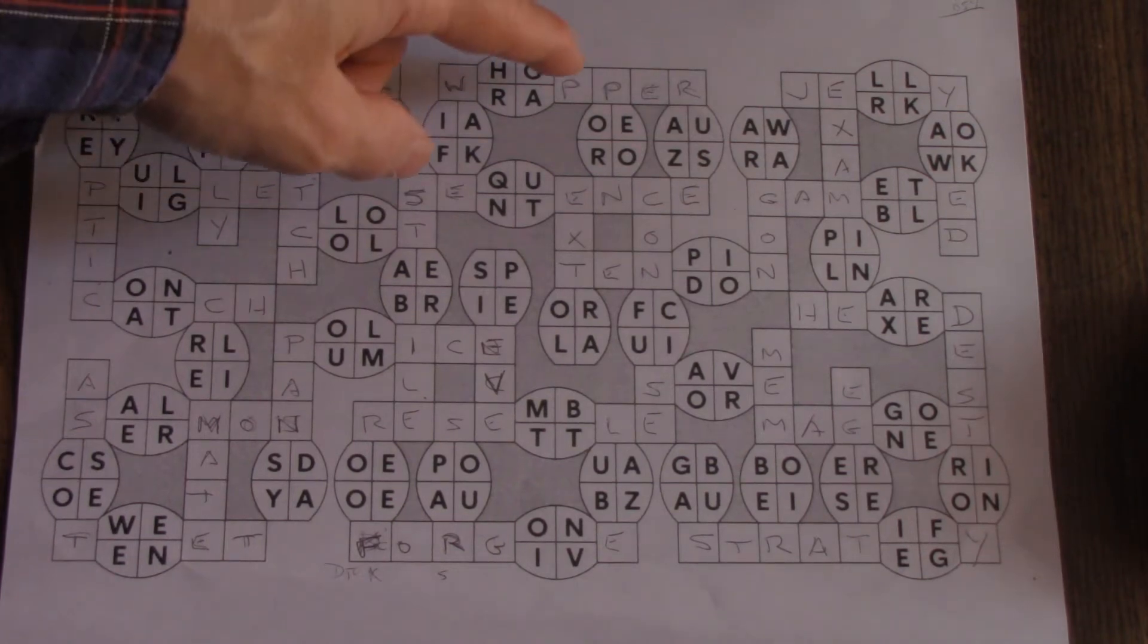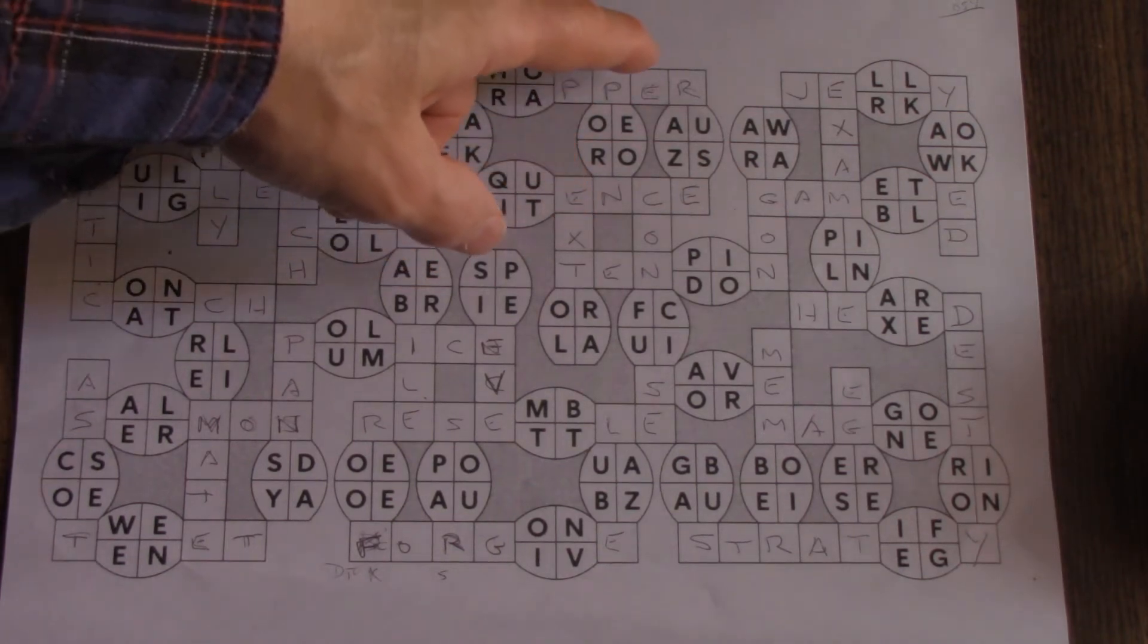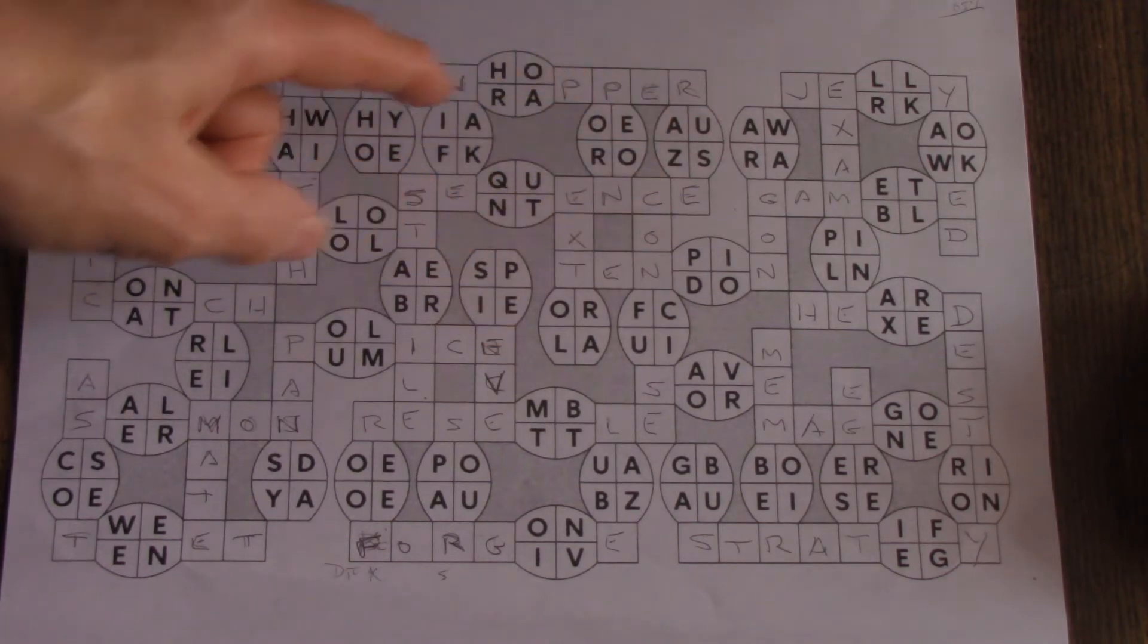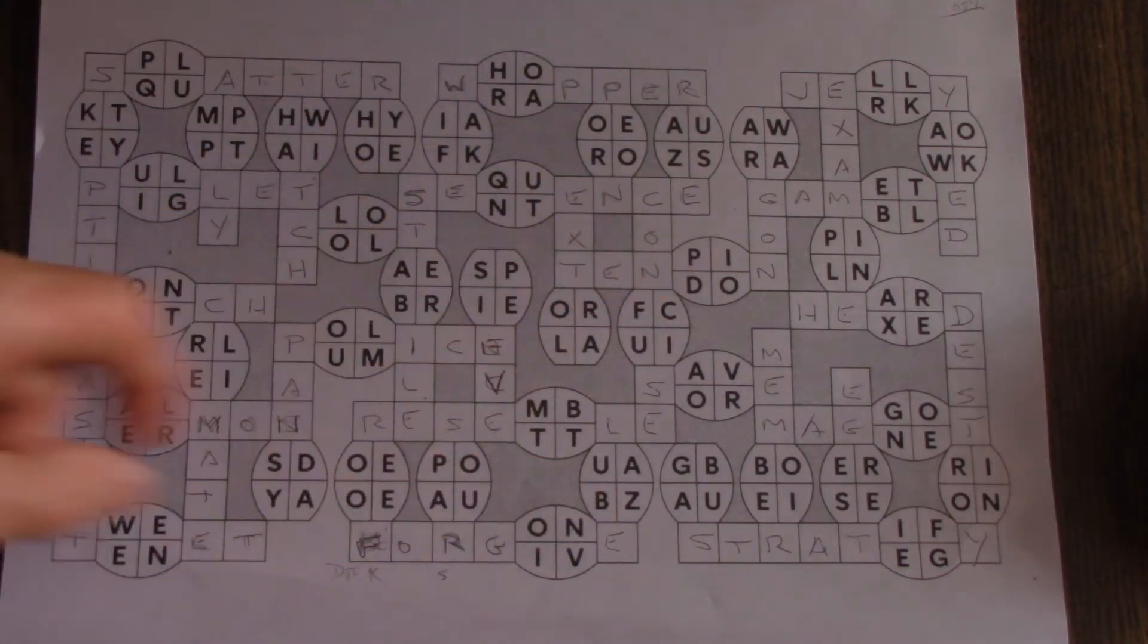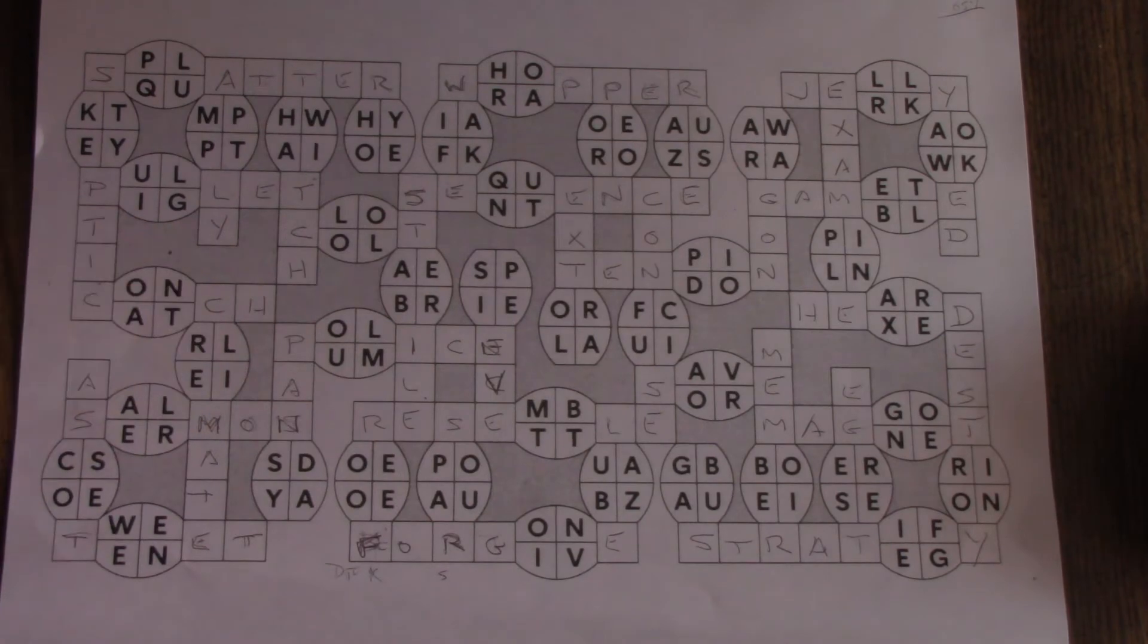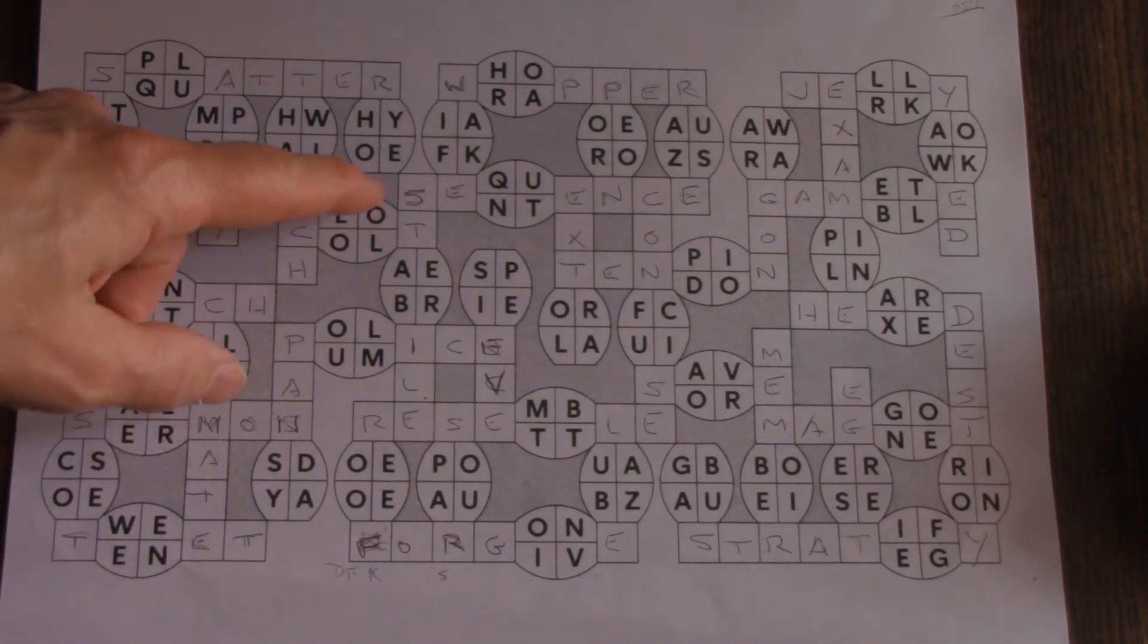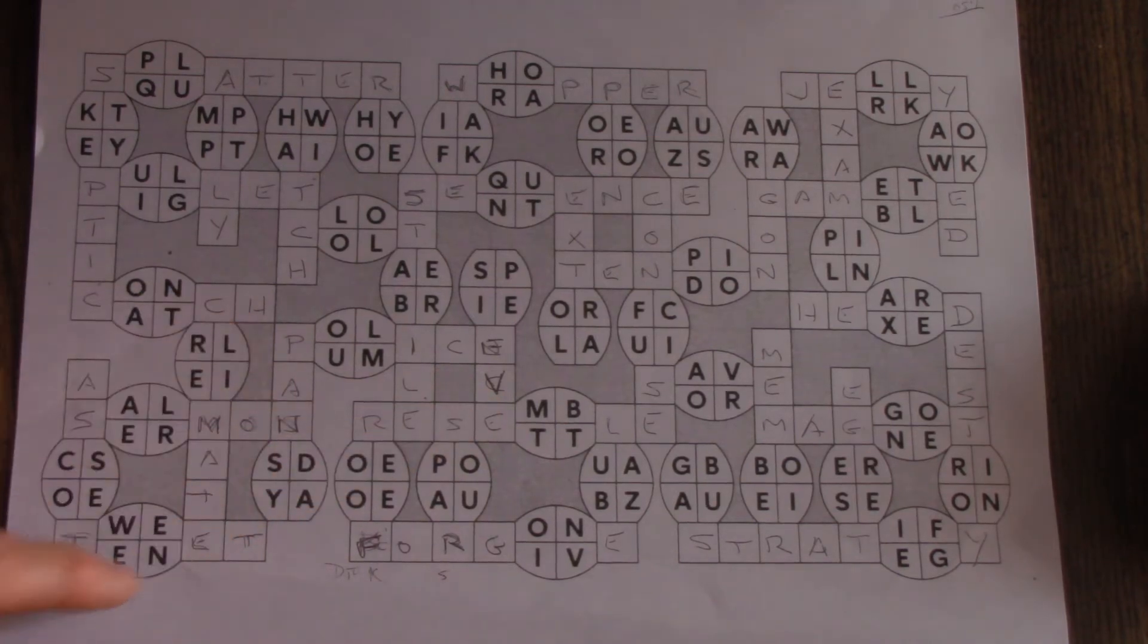Whopper and rapper, peon and porn, raise and ruse, sequence and sentence. I think that was the first one I got, actually. Stabile and sterile, police and pumice, panda and pansy, sermon and salmon.